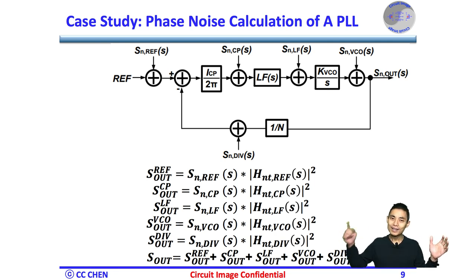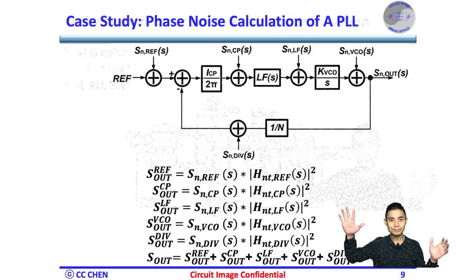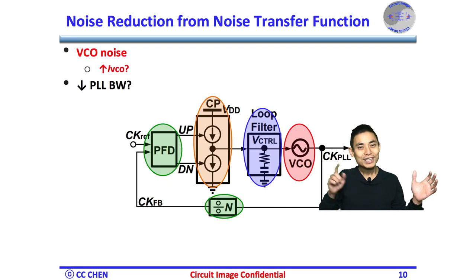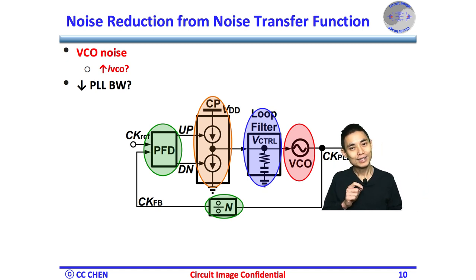What happened? Think about the noise contributor diagram for 5 seconds. Correct, the PLL output noise would be mainly from the VCO noise. To reduce the PLL noise or jitter, what can we do? Bingo!